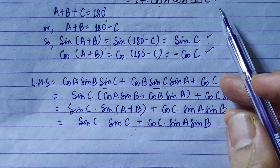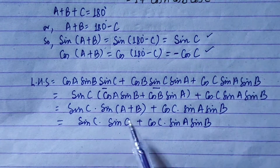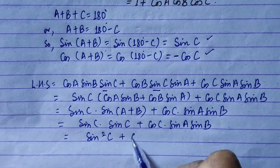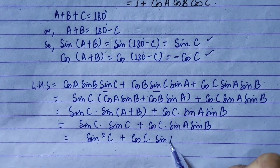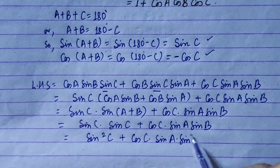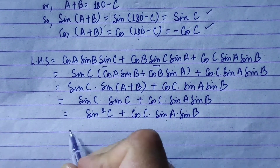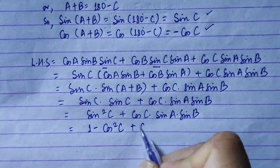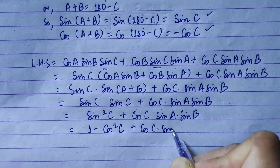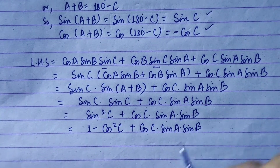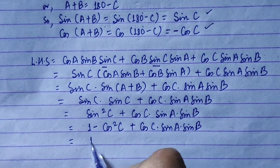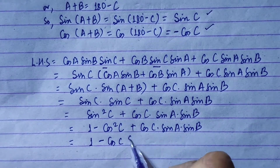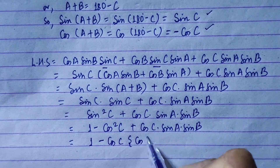So we have sin c times sin c, which is sin squared c, plus cos c sin a sin b. Continuing the simplification, we expand further.